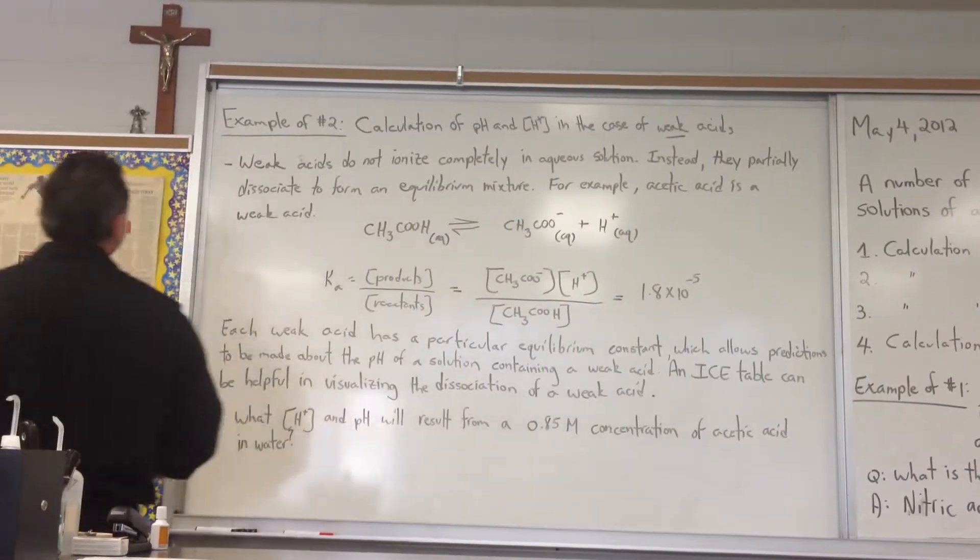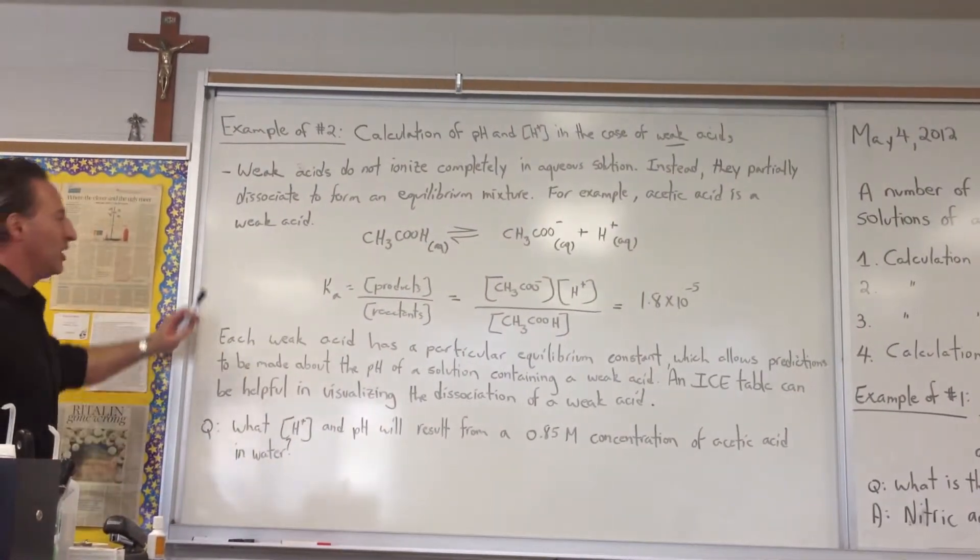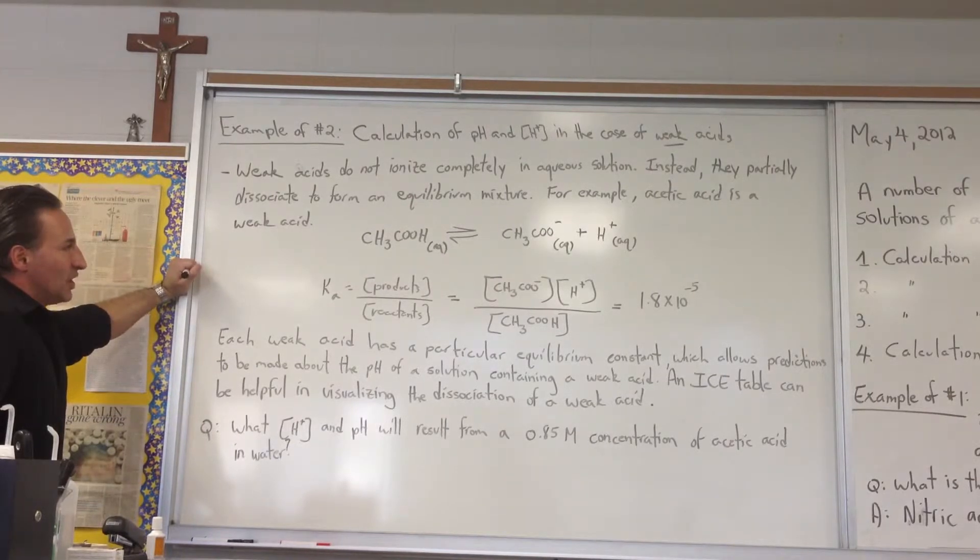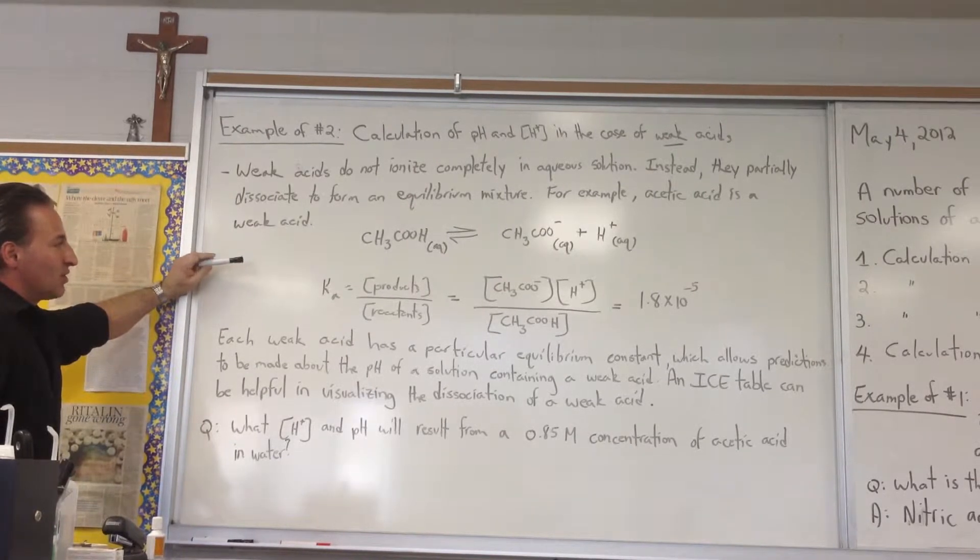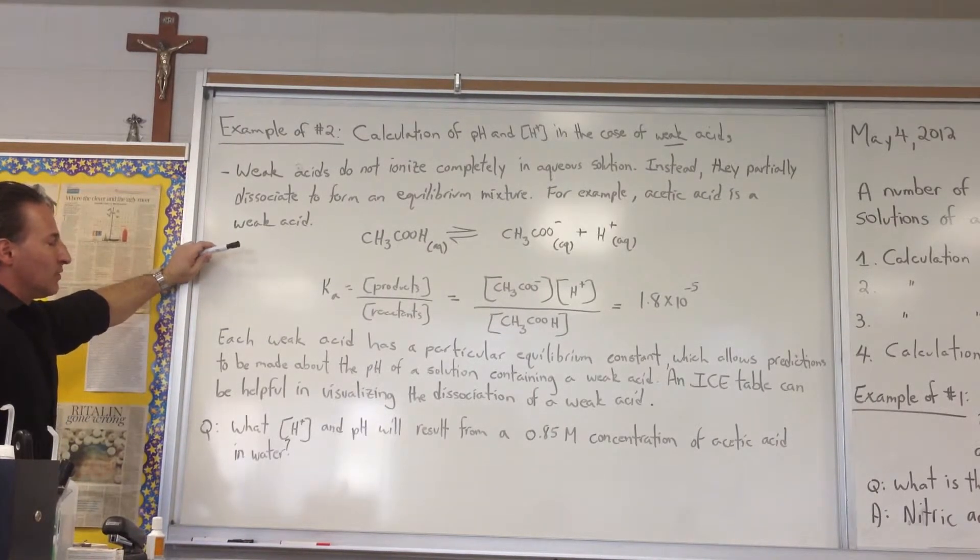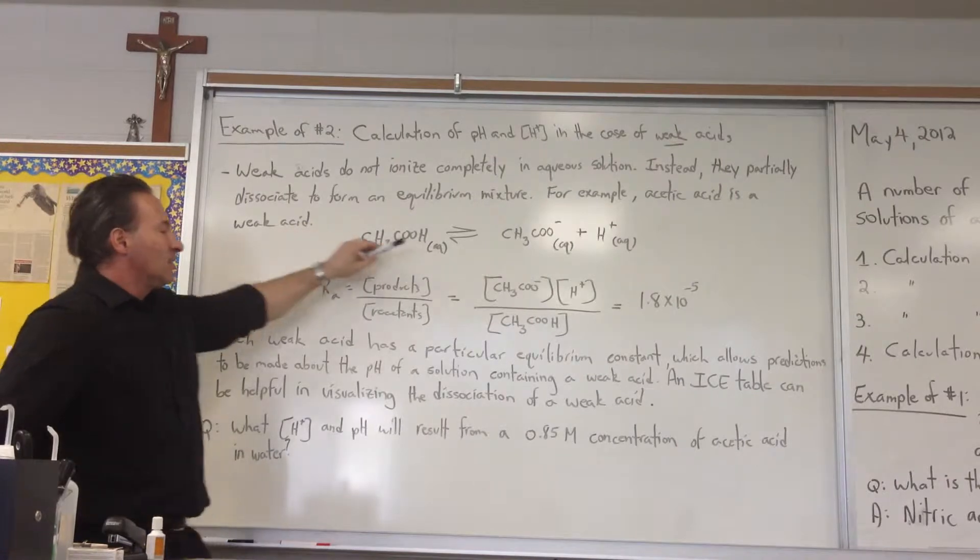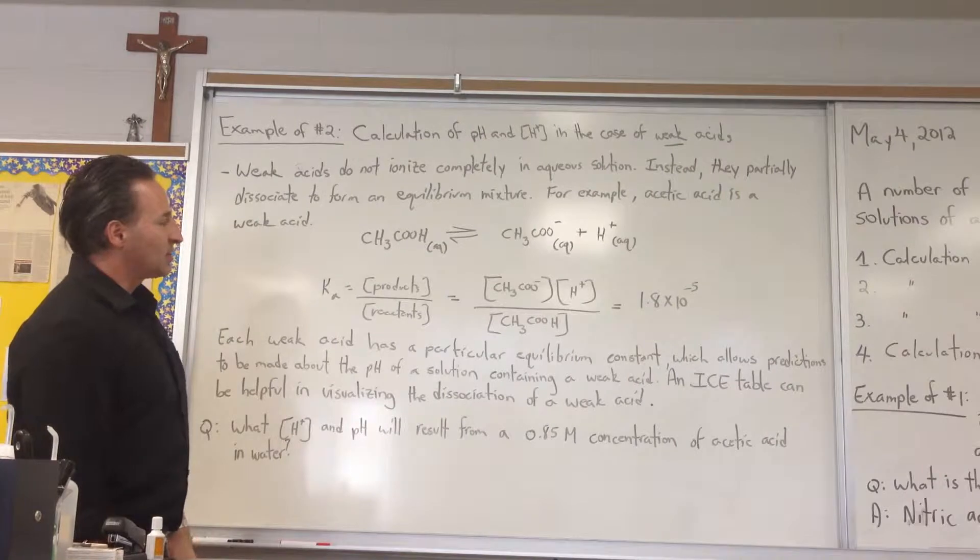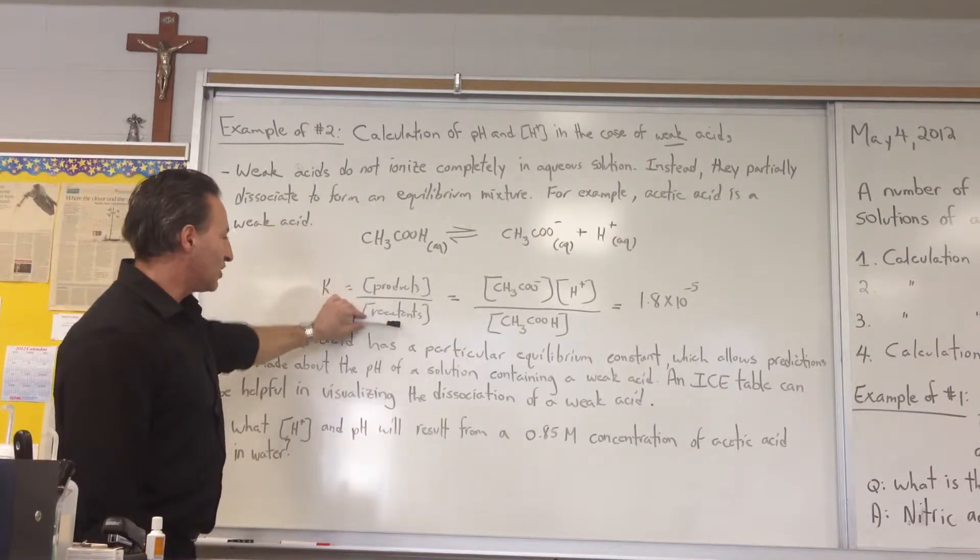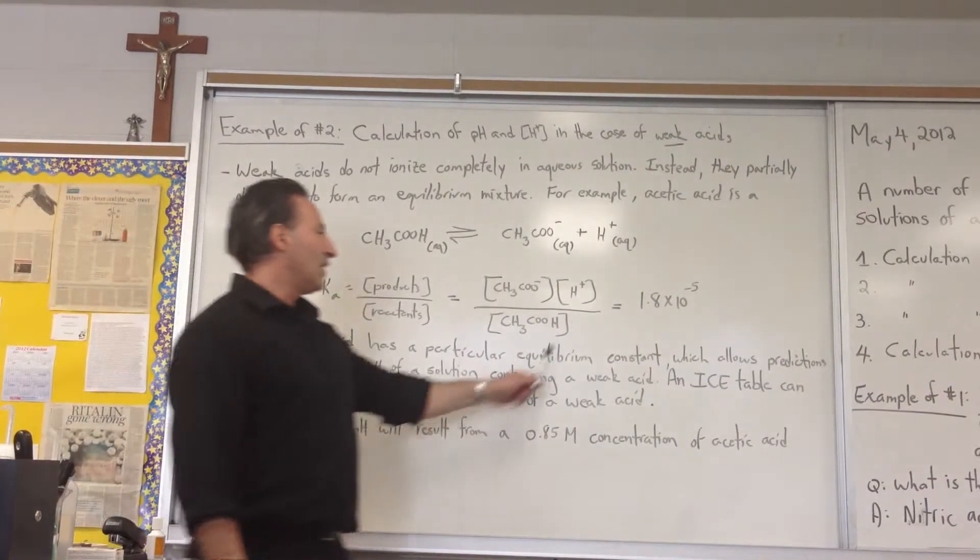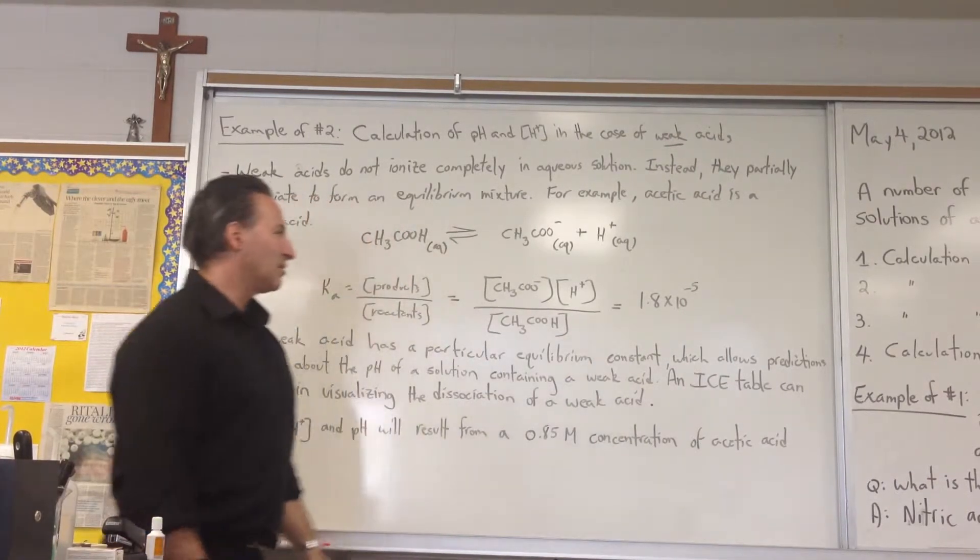For example number 2, we're asked to calculate the pH of a weak acid. Weak acids do not ionize completely in aqueous solution, so instead they partially dissociate. Their dissociation can be described using the equilibrium constant—we call it Ka for acids, Kb for bases. For a weak acid like acetic acid, you get the acetate ion forming and a proton. For acetic acid, the value of Ka happens to be 1.8 times 10 to the minus 5.